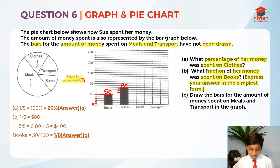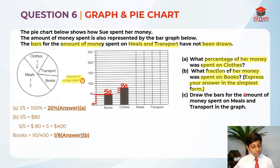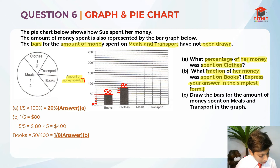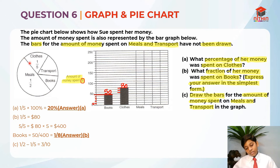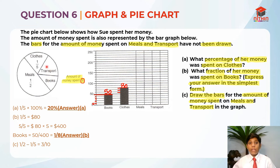Now let's read Part C: draw the bars for the amount of money spent on meals and transport in the graph. We need to draw both bars. To find the meals value, I take half minus one-fifth. Since meals takes up half the pie chart, the other half covers clothes plus transport plus books. So I'm finding the fraction of transport plus books together, which is half minus one-fifth, giving three-tenths.